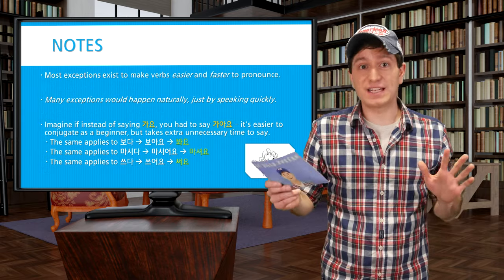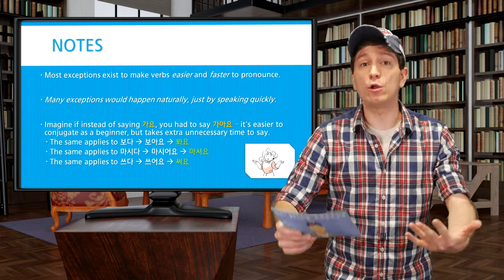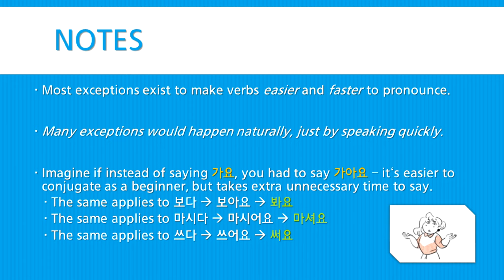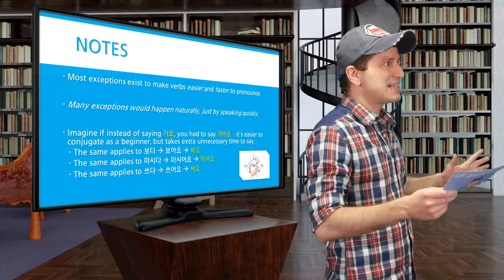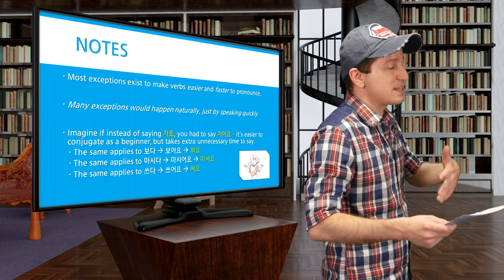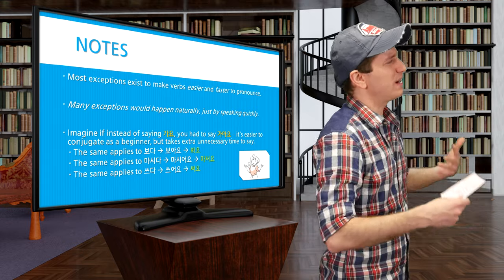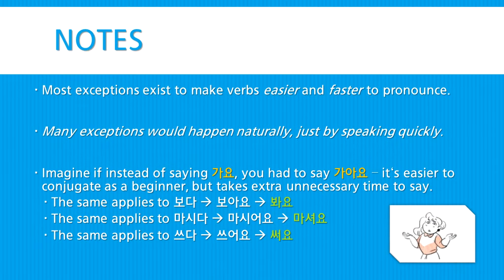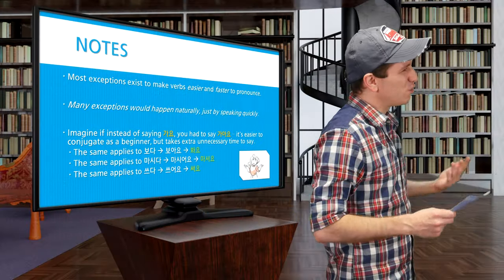There are a few more exceptions to cover, but first a disclaimer: these rules are all for your benefit — they help make the language easier and faster to pronounce. Many exceptions would just happen naturally by trying to speak quickly, so you don't have to memorize them; just practice and know they exist. For example, instead of saying 가아요, it's faster to just say 가요; 보아요 becomes 봐요; 마시어요 becomes 마셔요; and 쓰어요 becomes 써요. A lot of these rules are just intuitive.